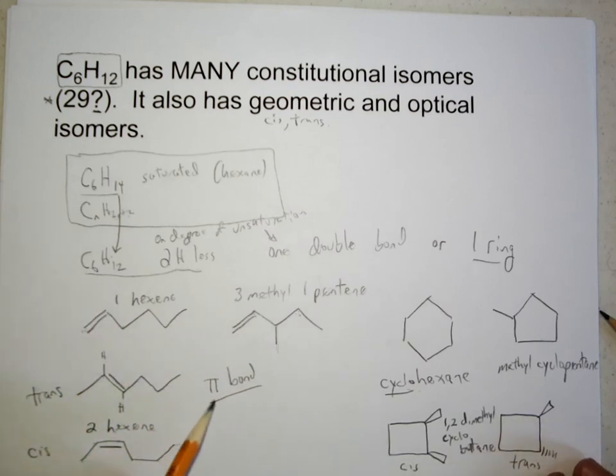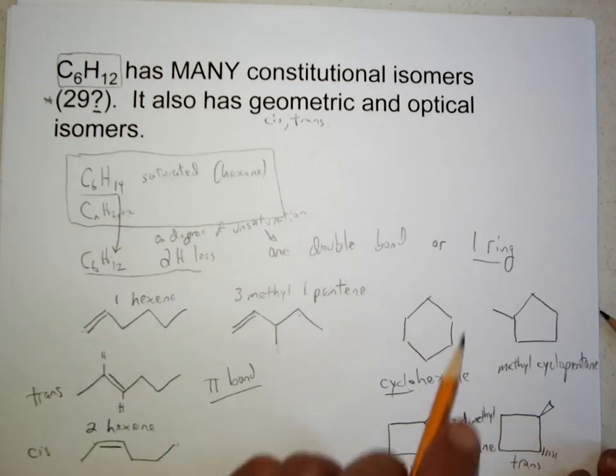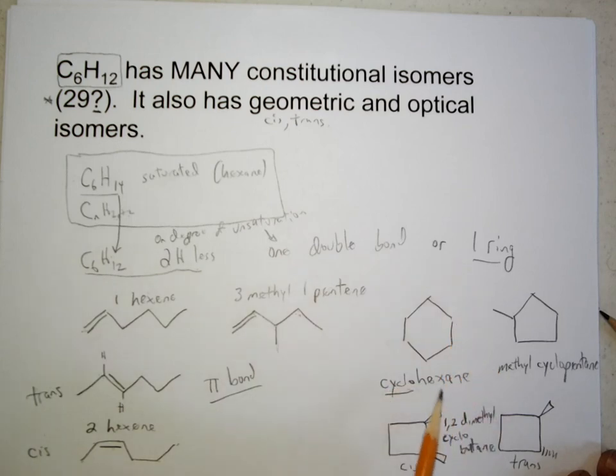When the degree of unsaturation has come from a multiple bond, then you also have the ring possibilities, different size rings, some with substituents. When we either have double bonds or rings, we have possibilities for cis and trans isomerism. So incredibly complex, and just a gentle introduction to some of the rich variety of compounds that you can get with a simple formula.